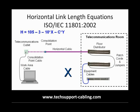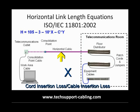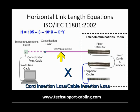X is the ratio of the cord or cable insertion loss to the fixed horizontal cable insertion loss. Supposing this is standard UTP cabling, the insertion loss for these cables may be anything up to 50% higher than that of the horizontal cable. In this case, X will equal 1.5.